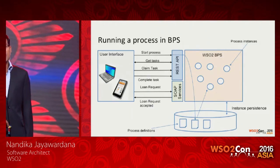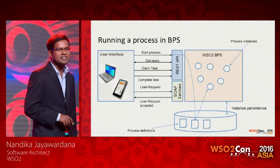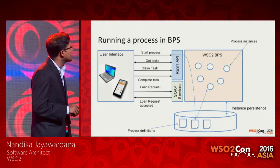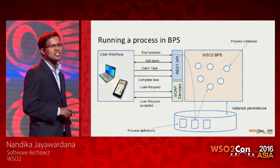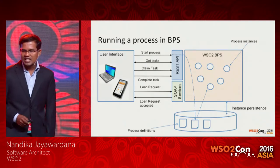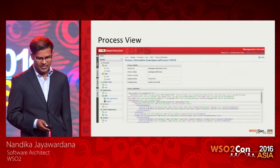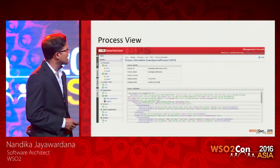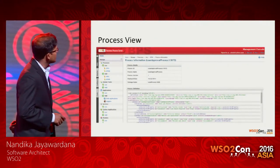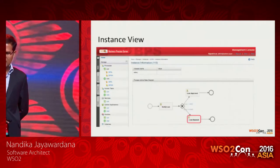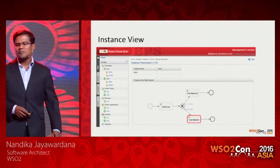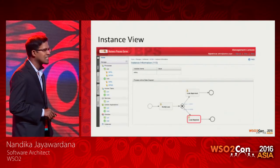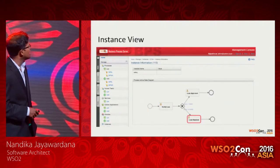For a BPEL process deployed in the server, a set of SOAP services are exposed and interaction happens via SOAP calls. An instance of the process is created and saved to the persistent store. The process server provides a process view showing process information and definition, and an instance view for a BPMN process showing variables and the current state of execution.